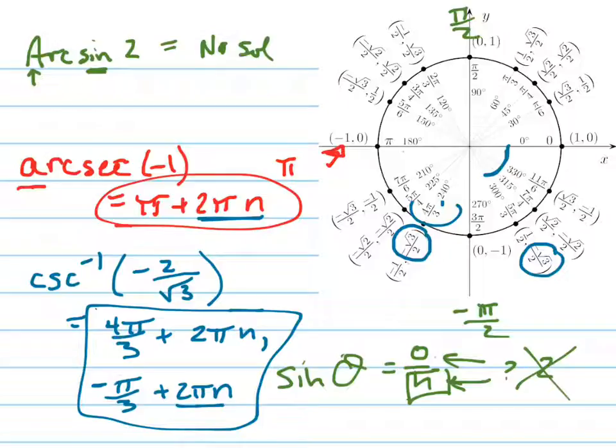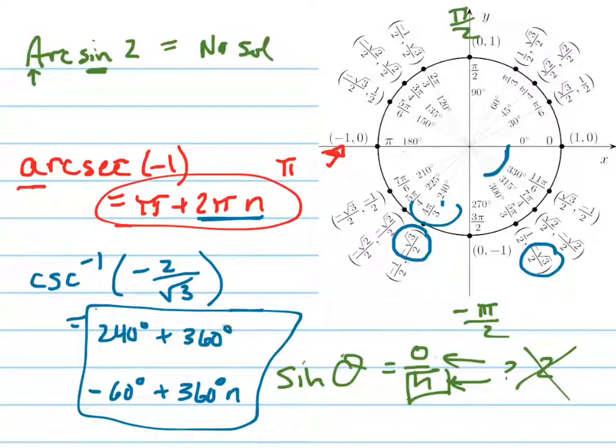Also, sometimes they may want the answers in degrees. And if they wanted it in degrees, instead of negative pi over 3 and plus 2 pi n, it would be negative 60 degrees plus 360 degrees times n. That's the same, that's saying it the same way. And so instead of 4 pi over 3, this would be 240 degrees plus 360 degrees times n.